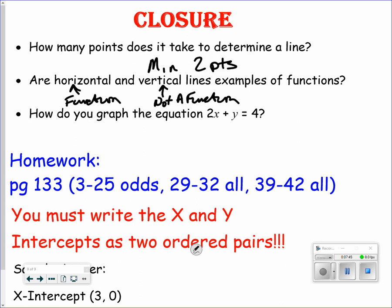And how do you graph the equation of 2x plus y equals 4? I'm going to put 0 in for y and solve. That will give me my x-intercept. I'm going to put 0 in for x and solve. And that would give me my y-intercept. You must write the x and the y-intercepts as ordered pairs, stating that again. Your homework assignment is a book assignment. And if you have any questions, please make sure you reach out to your teacher. And good luck.